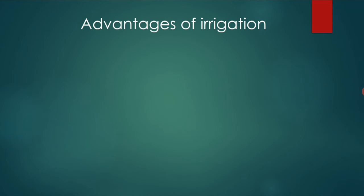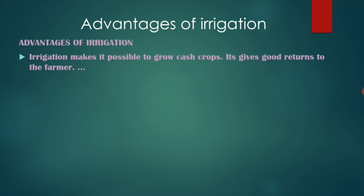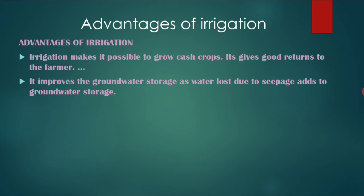Now, advantages of irrigation. First, irrigation makes it possible to grow cash crops. Second, it improves groundwater storage — water lost due to seepage adds to groundwater storage, so during the rainy season the water seeps inside the ground, and this storage is called groundwater storage.